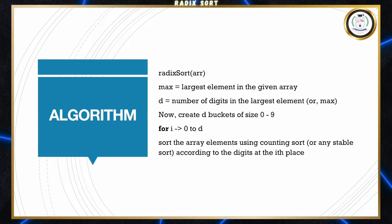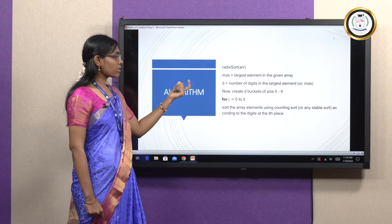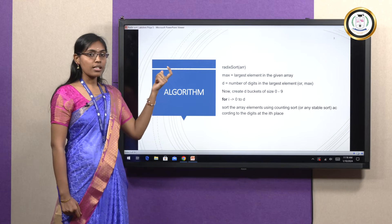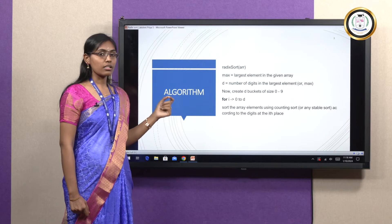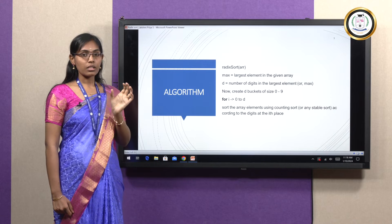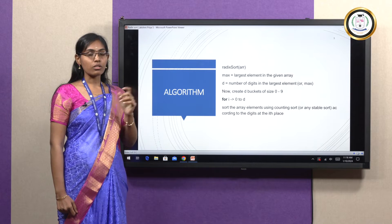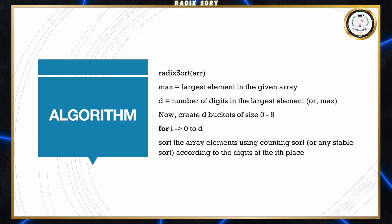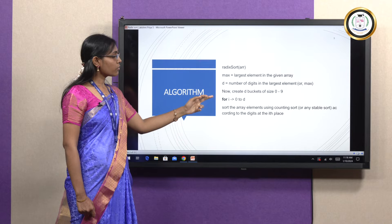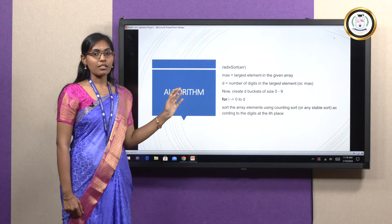Looking at the algorithm: Radix Sort takes an Array — the collection of elements — and Maximum, which is the largest element in the array. D is the number of digits in the largest element; for example, if you have 3000-something, it will be 4 digits. We create D buckets which hold values from 0 to 9, and for i from 0 to D, we sort the elements.